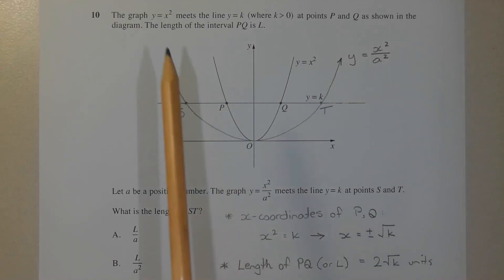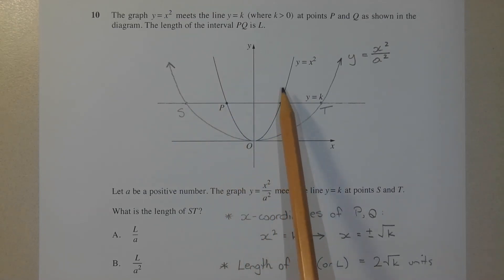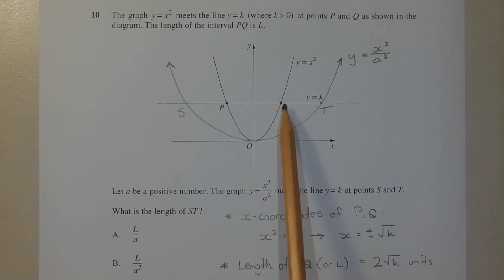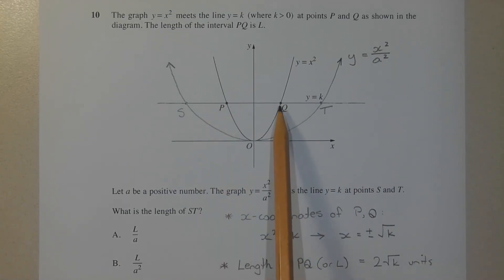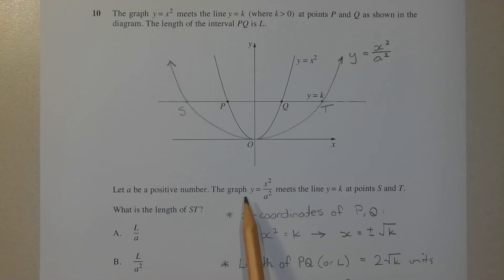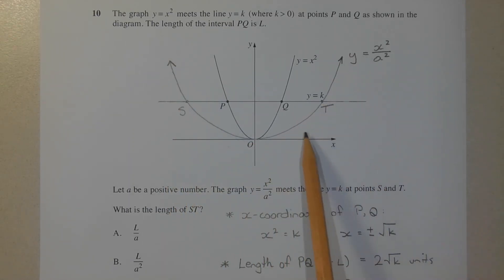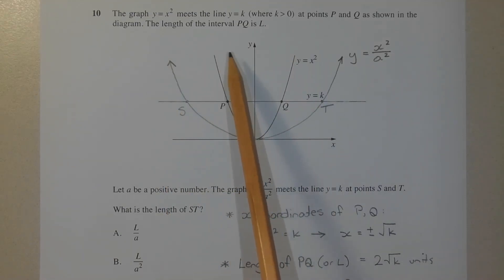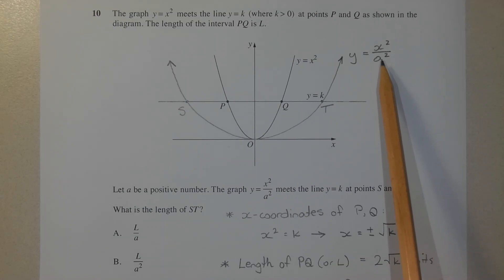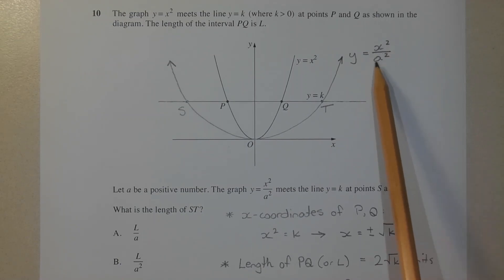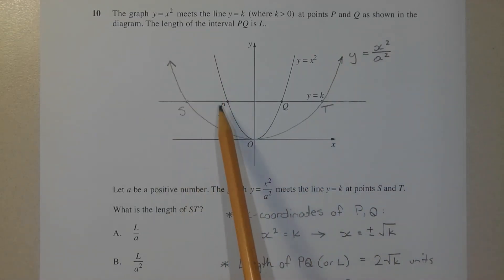Let's go through the question. We have a graph — a parabola — y equals x squared, meeting the horizontal line y equals k at points P and Q. The length of interval PQ is represented with the capital letter L. I've sketched the graph of y equals x squared over a squared, and I've sketched it wider than the original parabola. It could be narrower, but it's easier if it's wider. For example, if a equals 2, that's x squared over 4, which results in a wider parabola.